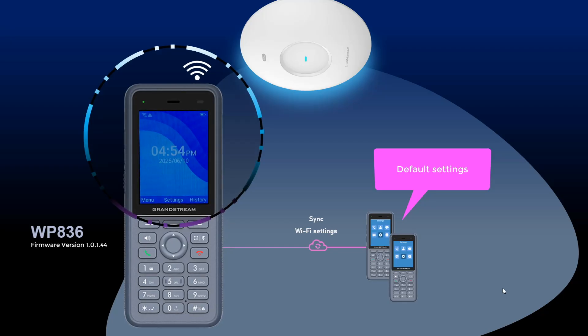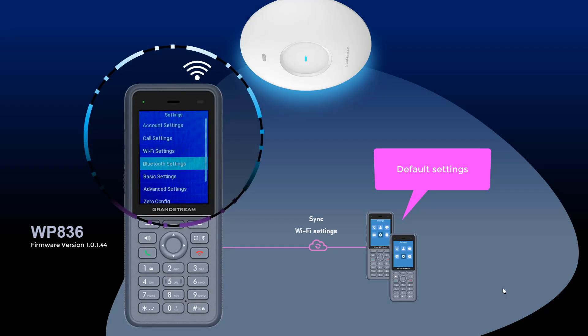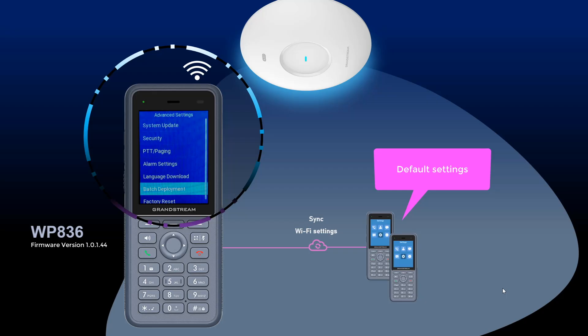The batch deployment feature is available from the phone LCD menu under Settings, then Advanced Settings. Go ahead and enable batch deployment.